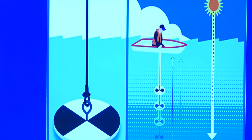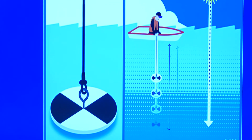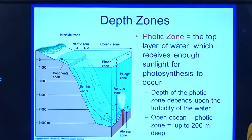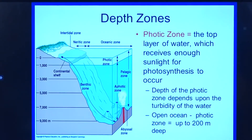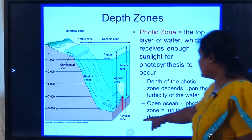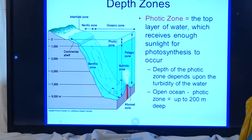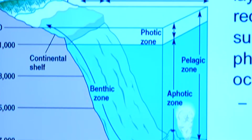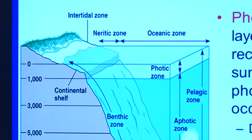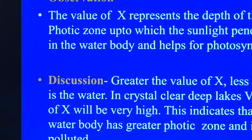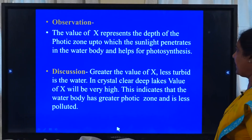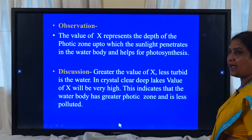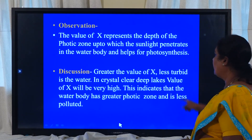Photic zone is the zone where the light penetrates. This diagram is depicting the ocean. The deepest portion in the ocean we call the abyssal zone. The photic zone is very minimum here, just 200 meters deep. In the observation, the value of X will represent the depth of the photic zone up to which sunlight penetrates in the water body, and this zone alone can support photosynthesis.